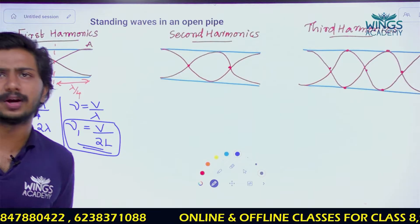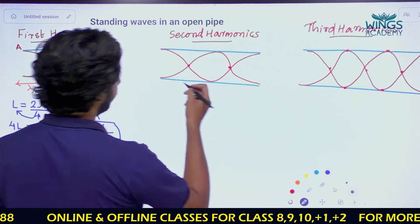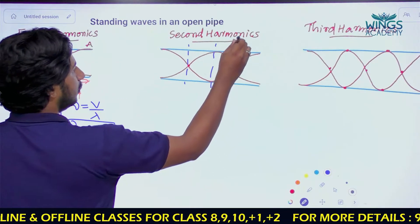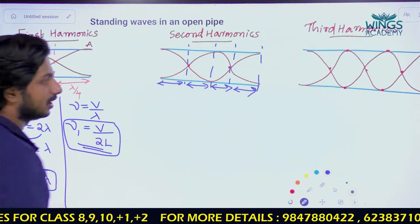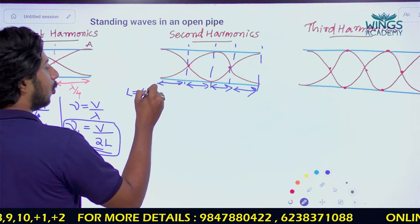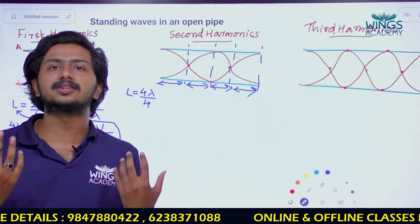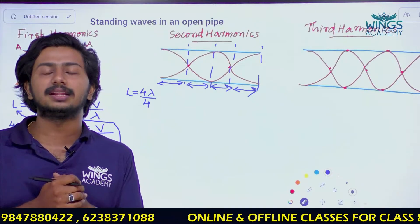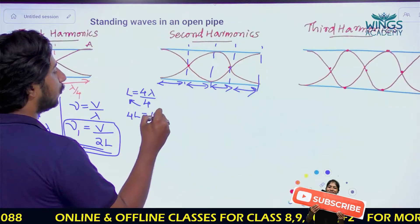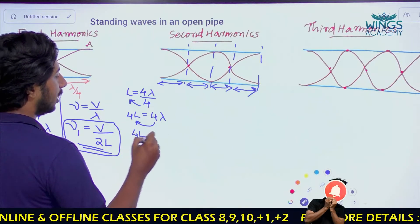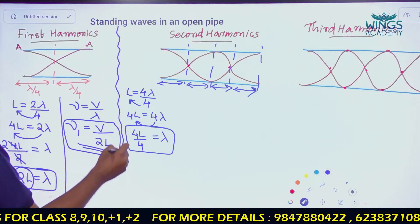Now for the fundamental frequency: for the second harmonics, where do you come to the length? l is equal to 2λ/4, then l is equal to 4λ/4. The length is equal to 4λ/4, so l = λ.